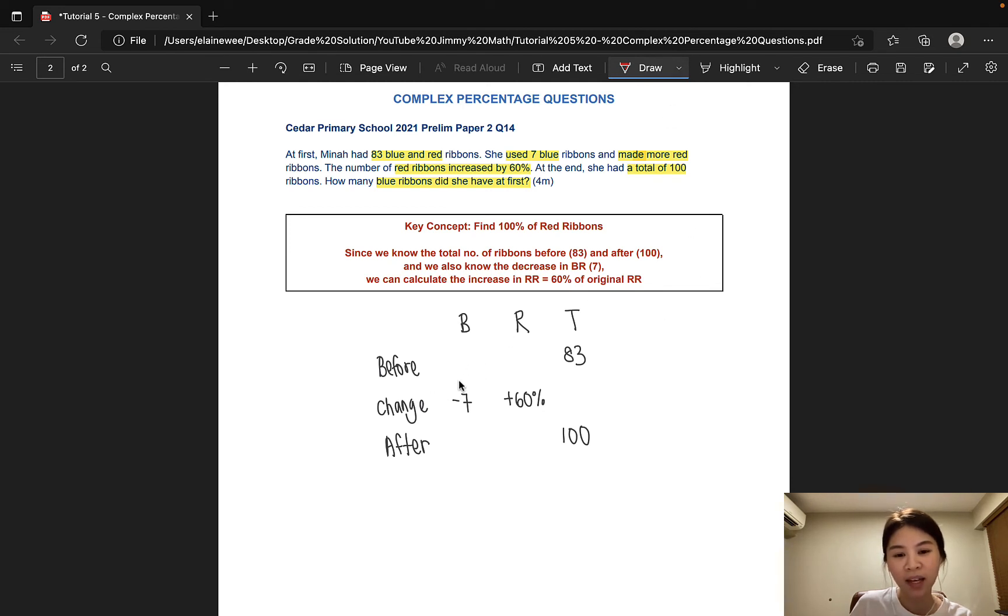So all the information we have is here right now. How do we start? Since there was a decrease in the number of blue ribbons by 7, we can go ahead and do that. 83 minus 7 would give us 76.